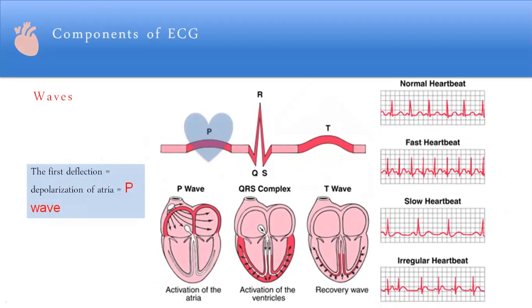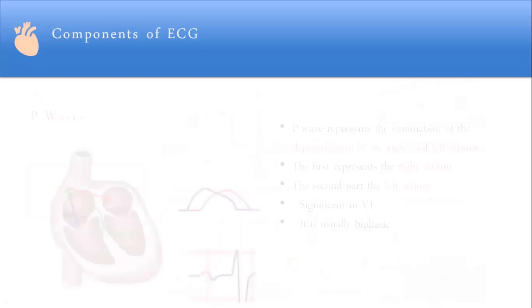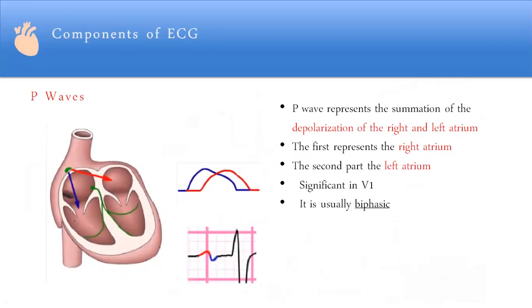We can see the waveforms coming out on the ECG. There are P-waves, which are the first deflections, and P-waves represent atrial depolarization.